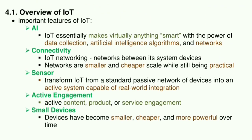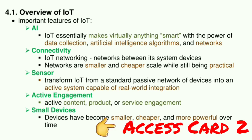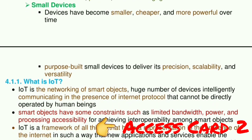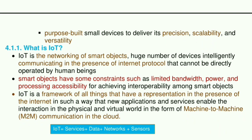IoT essentially makes virtually anything smart with the power of data collection, artificial intelligence algorithms, and networks. Connectivity: IoT networking, networks between its system devices, networks of smaller and cheaper scale while still being practical. Sensors transform IoT from a standard passive network of devices into an active system capable of real-world integration. Active engagement, active content, or service engagement. Small devices have become smaller, cheaper, and more powerful over time. Purpose builds small devices to deliver precision, scalability, and versatility.